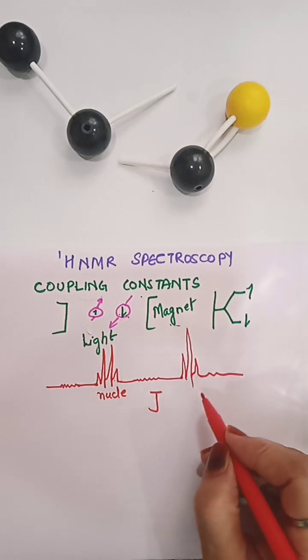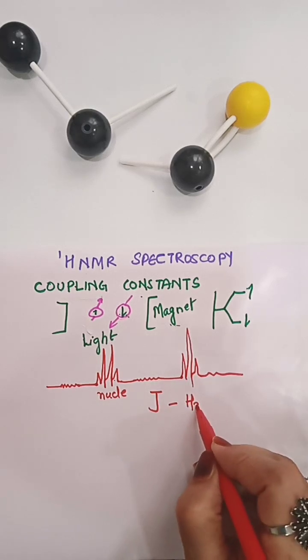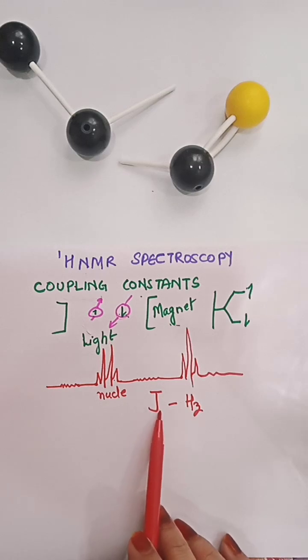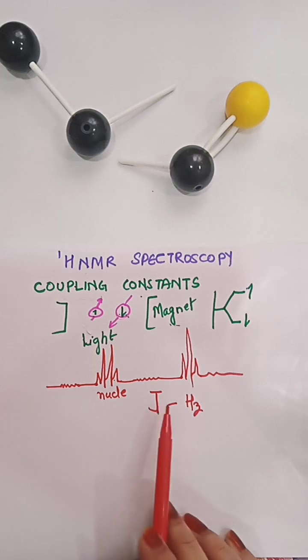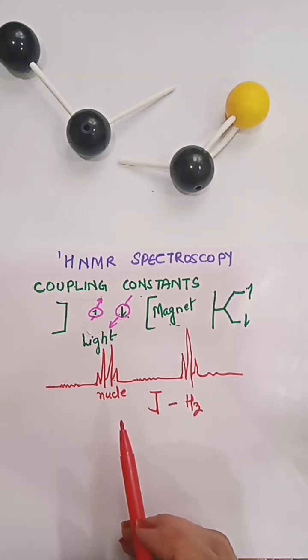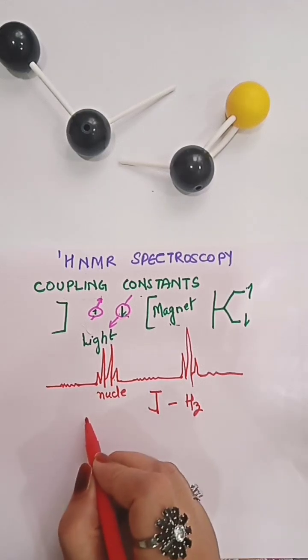It is measured in Hertz. By convention, superscript before the symbol J represents the number of intervening bonds between the coupling nuclei. So how do we label it? It is indicated like, before the symbol...